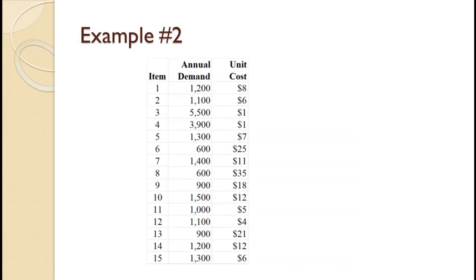A manager has a list of unit cost and estimated annual demand for the 15 items they carry in inventory. She wants to categorize the items on an ABC basis. The data is shown on the slide. Since you have seen an example already, let me suggest that you pause the video and try to work this problem on your own. Once you are done, you can use this video to check your work and spot any mistakes you might have made.